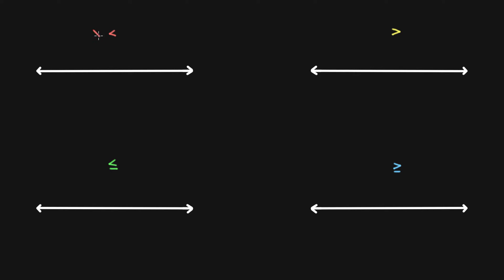If we have something like x is less than negative 2, negative 2 might be somewhere like here. We can skip by 2s like this. When we have a less than sign, we're going to use an open circle. Since x is going less than, we kind of have a less than symbol, so we know we're going to the left — it will look exactly like this.